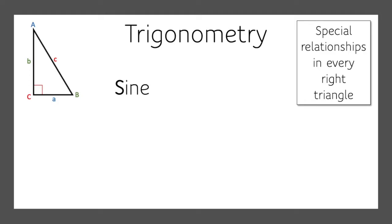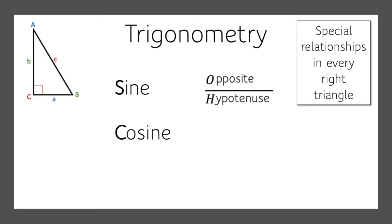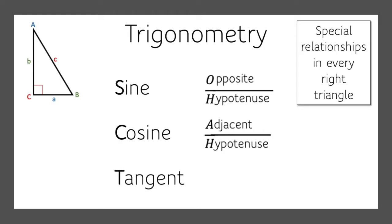The first one is sine, which is opposite over hypotenuse. The next one is cosine, which is adjacent over hypotenuse. And the next one is tangent, which is opposite over adjacent.